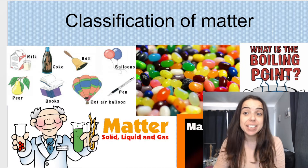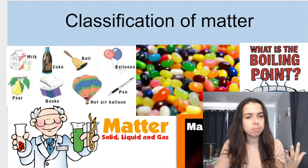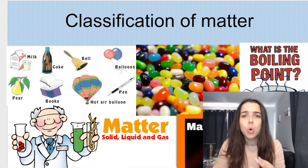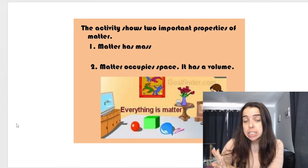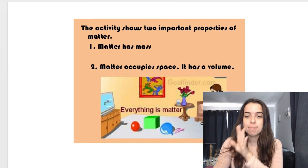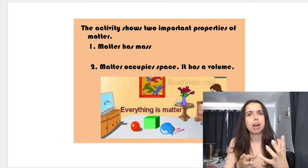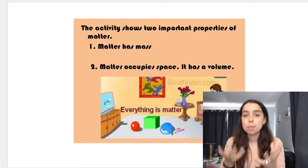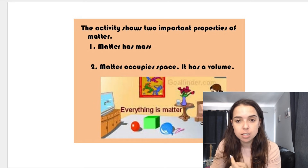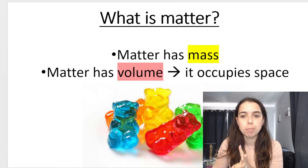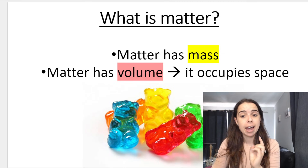Matters and materials — classification of matter. So behind me you can see a whole bunch of different types of matter. We'll go into what makes matter matter. The first thing you need to know is that matter has mass — mass as in something measured in grams or kilograms. Matter has mass and matter occupies space, so it has a volume. Those are two very important things to note about matter: mass and volume.